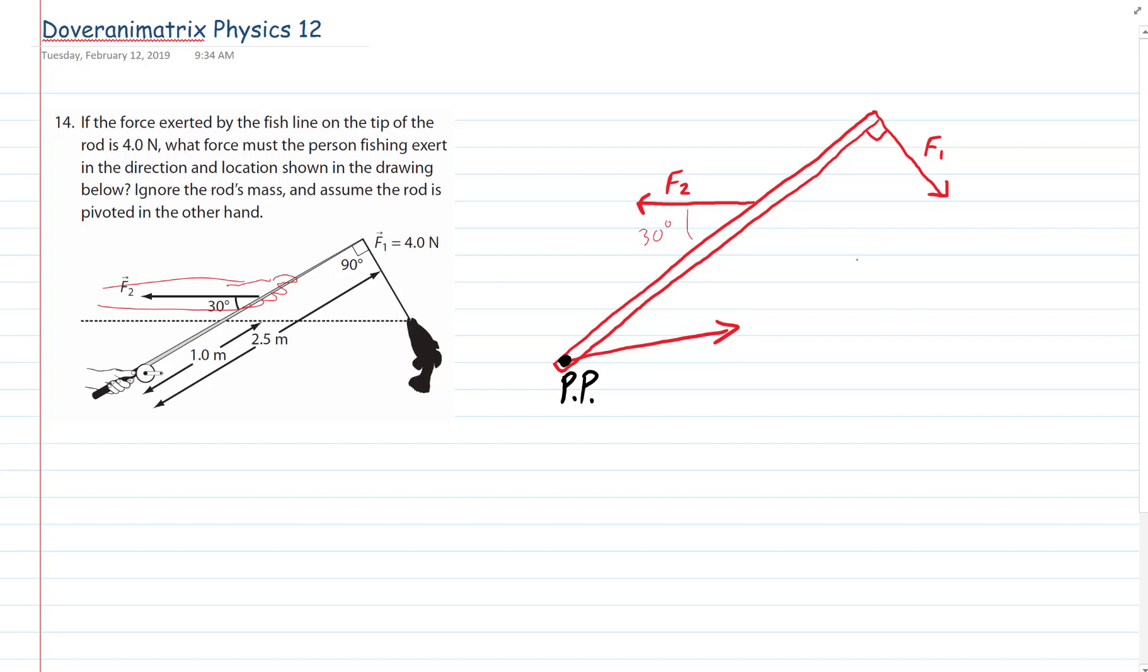So we draw the rod as it's done there. And now we just do the sum of the torques. Sum of the torques is equal to zero. And the pivot point is at bottom. As shown. Okay.